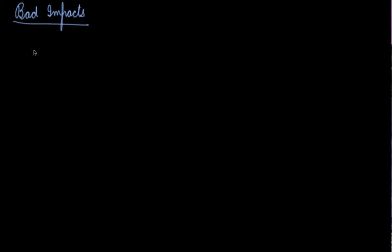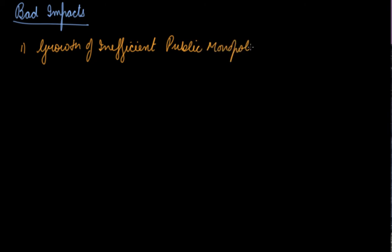The bad impact of the strategy: the first was growth of public monopolies. Before 1990, telecommunications was only in the hands of the government. We know the condition of BSNL at that time — people had to wait years to get a phone connection. Government companies worked inefficiently, and the growth of public monopolies was a bad effect on the Indian economy, with only one seller and a large number of buyers.